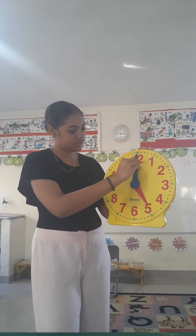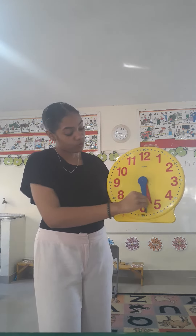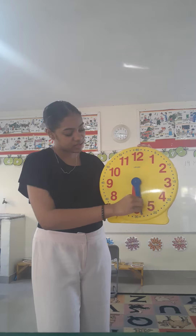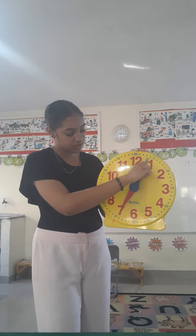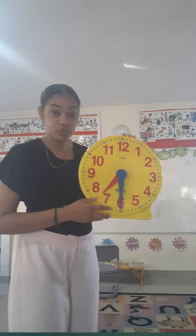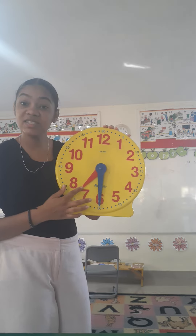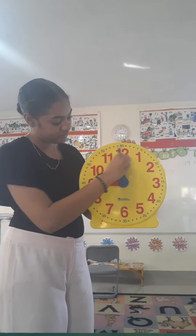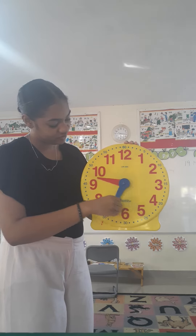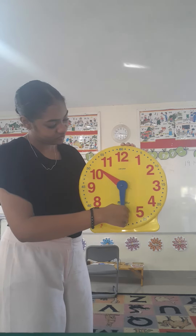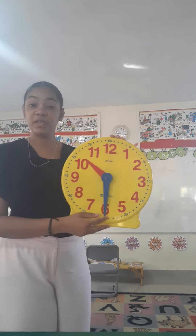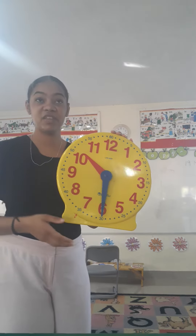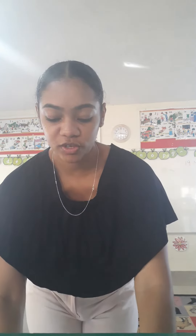Let's try half pasts. When the big blue one is on six, that means it's half past. So this would be half past seven. Let's try another one — okay, that would be half past ten.